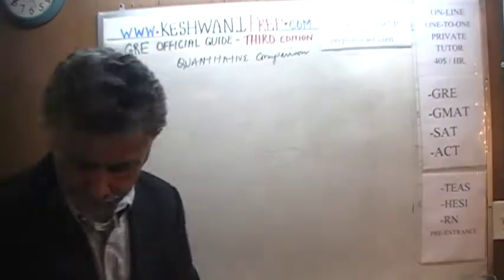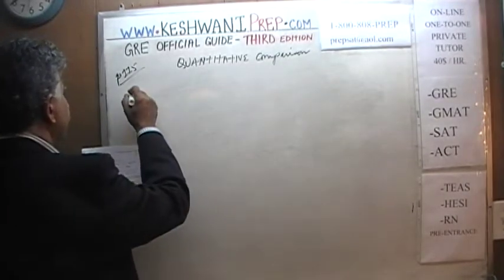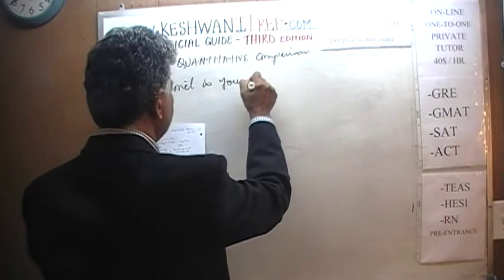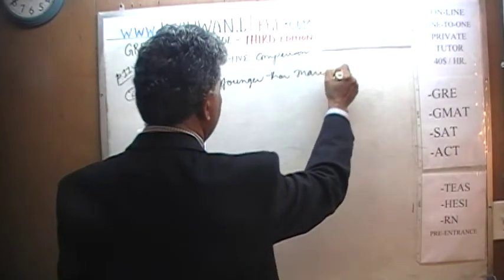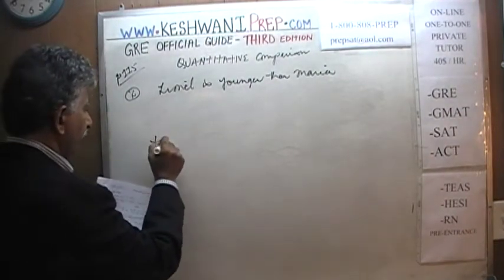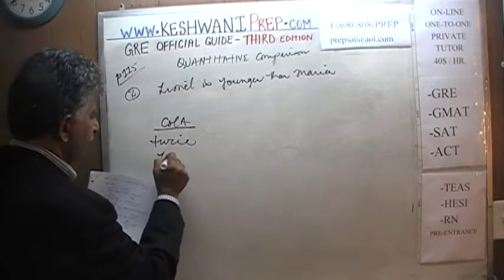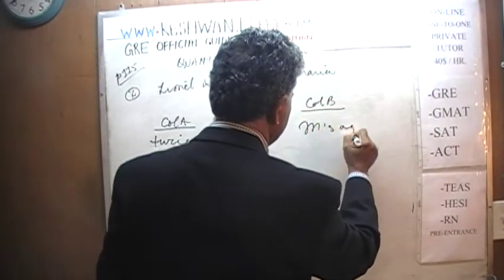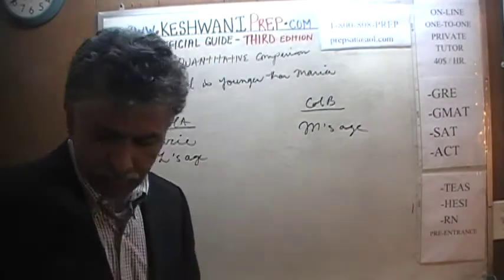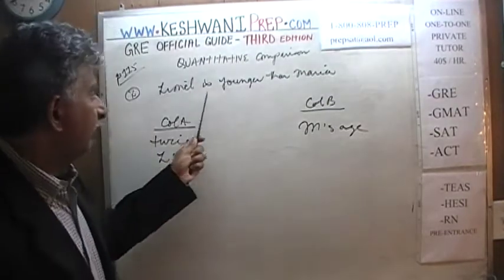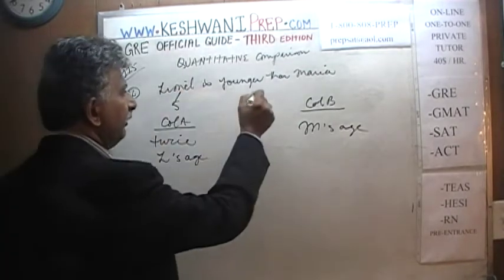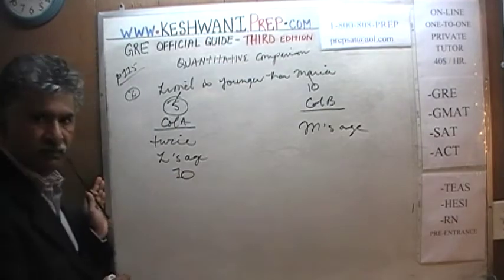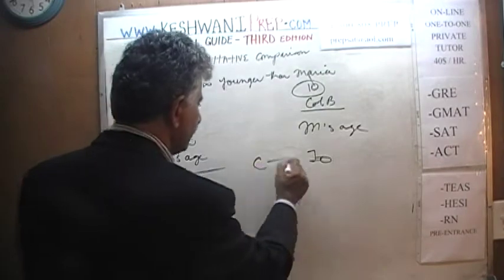Number two. We are told that Linel is younger than Maria. In column A we have twice Linel's age, and in column B we have Maria's age. What do we do? Just plug in numbers — anything you like, as long as you satisfy the condition that Linel must be younger than Maria. Let's pretend Linel is 5 and Maria is 10. If Linel is 5, twice Linel's age is 10. Maria is 10. So far the answer is C — they are equal to each other.